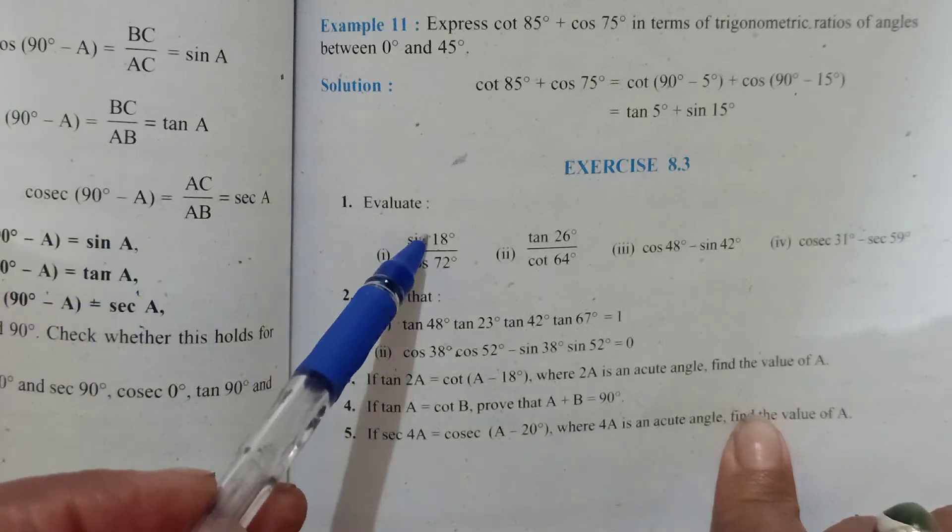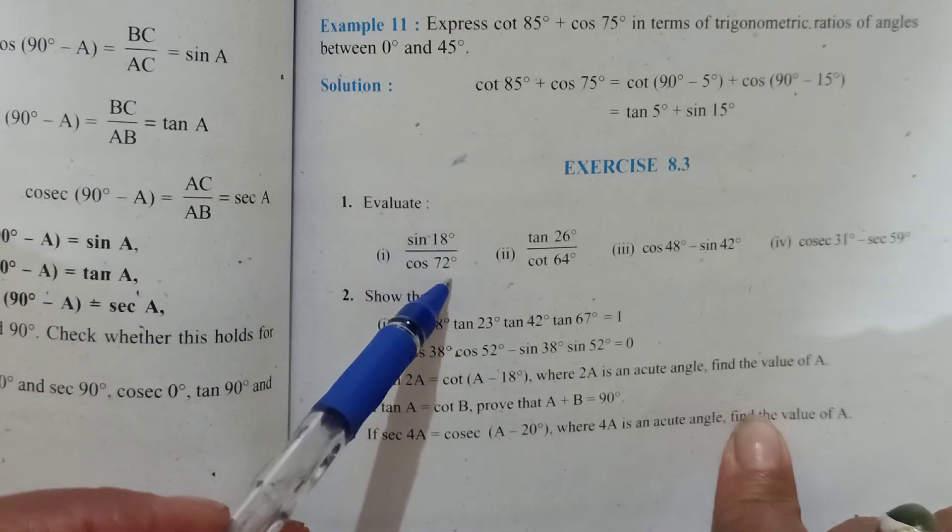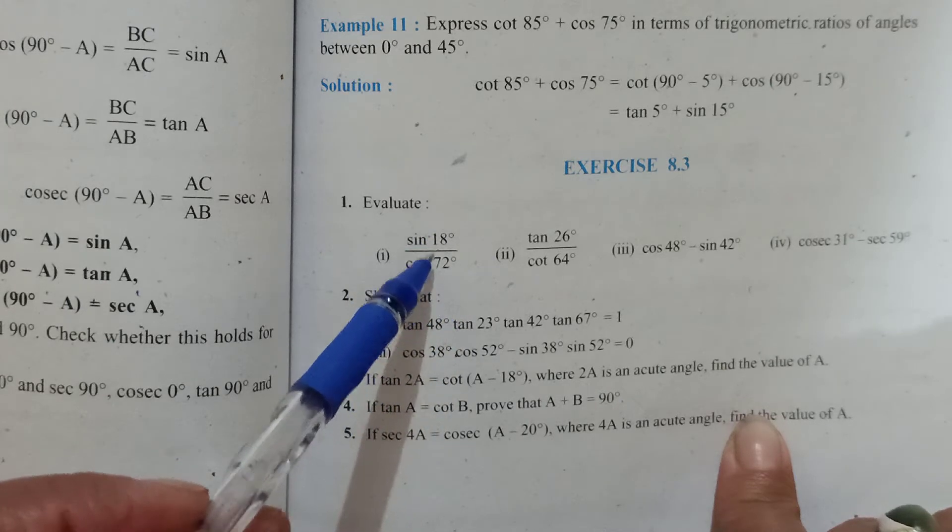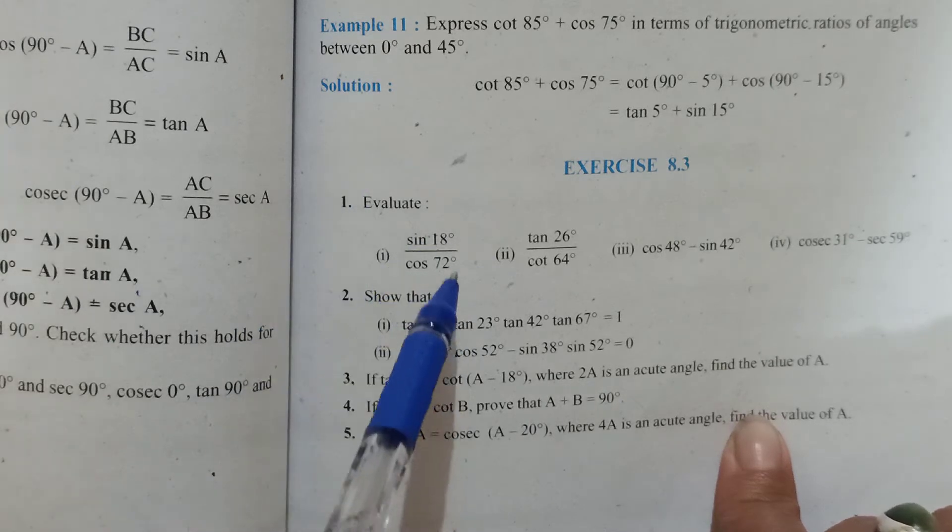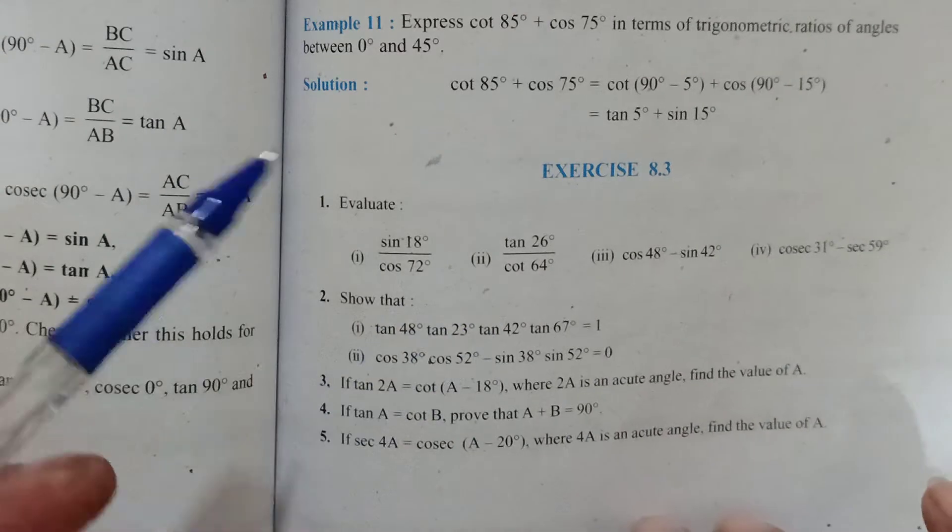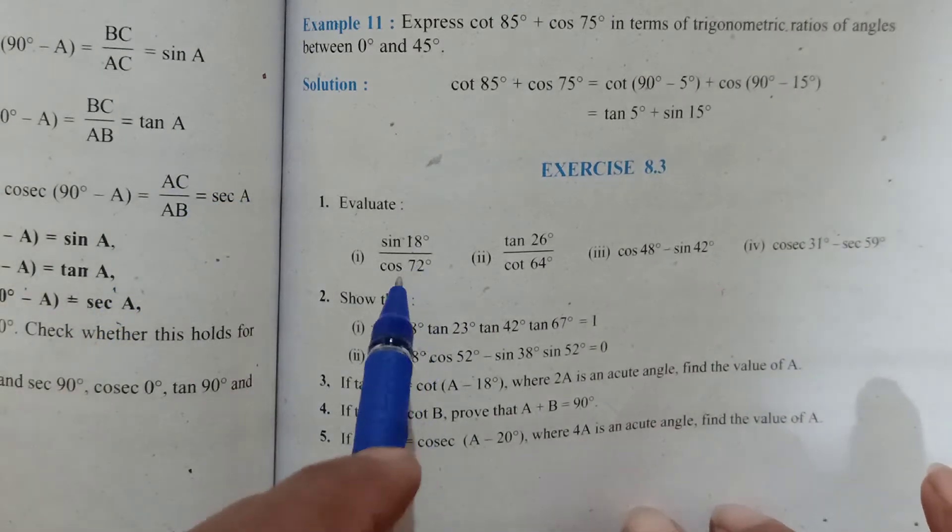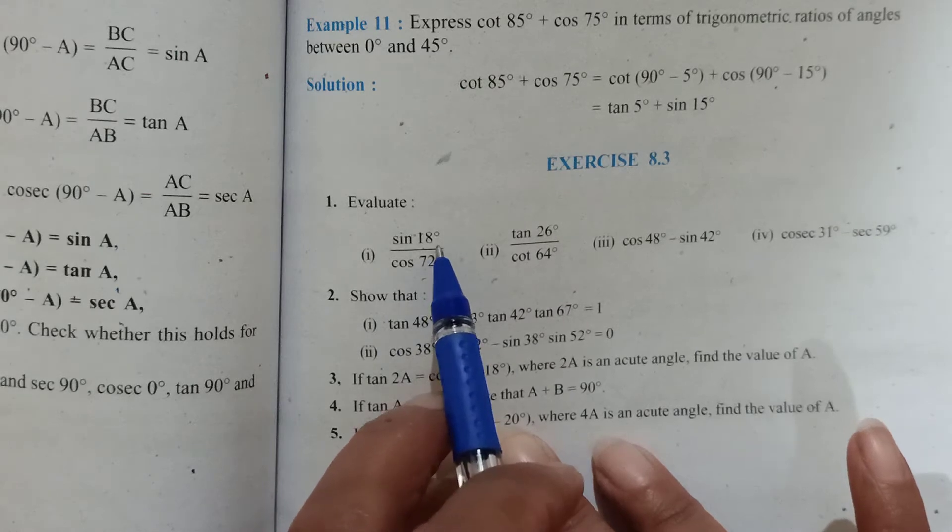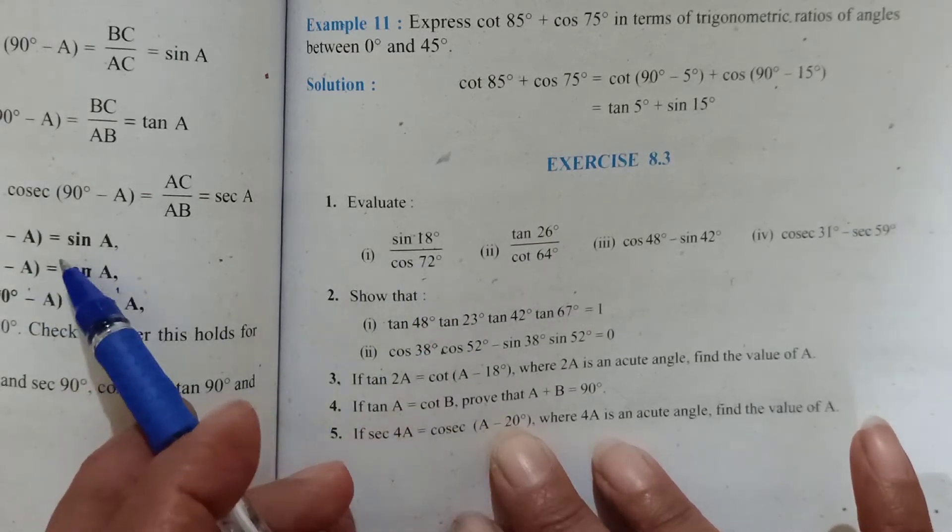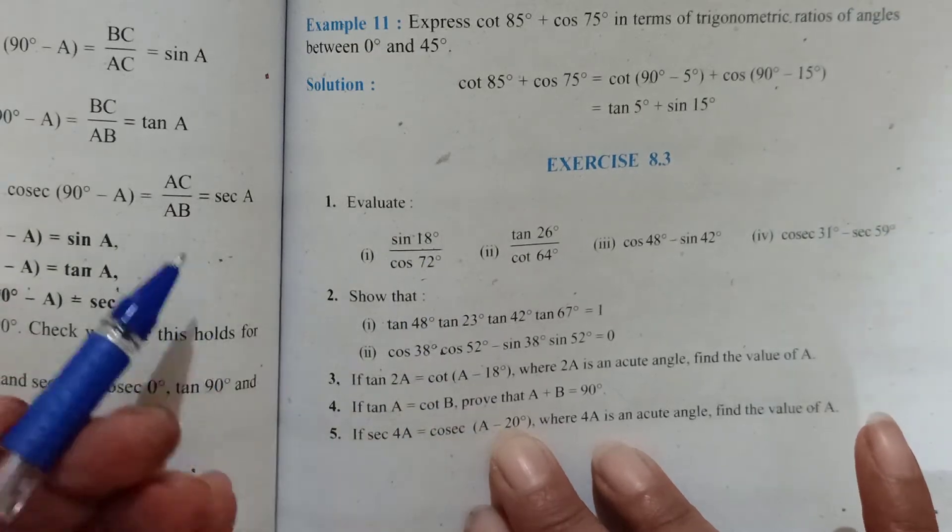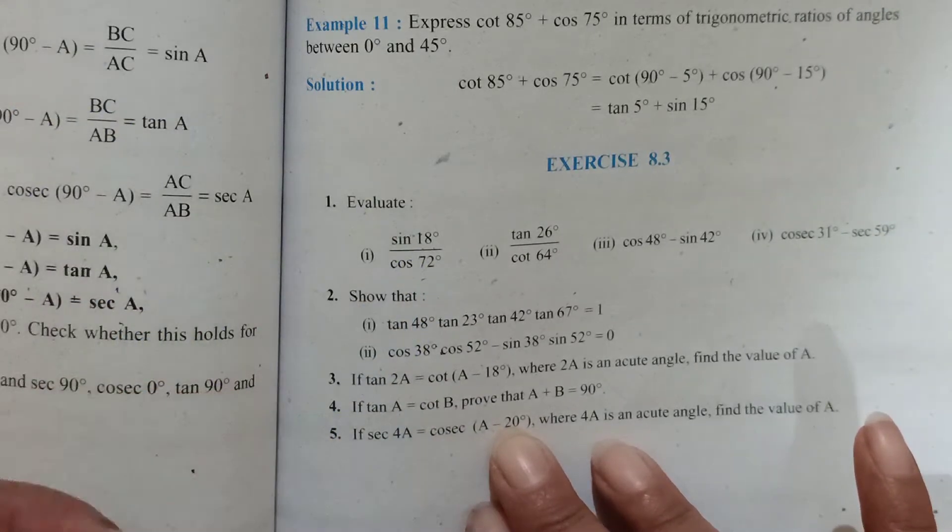Children, what we have to observe here is since we are talking about complementary ratios or complementary angles, check this: 18 plus 72 becomes 90. So if you observe such angles whose sum is 90, it means one is complement of the other. So what we're going to do here is one of the angles we will leave as it is, the other one we will write as complement of this and then apply the formula to simplify.